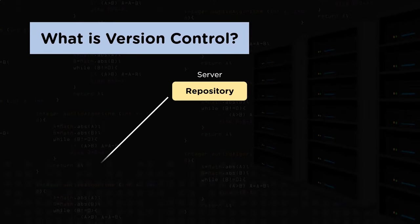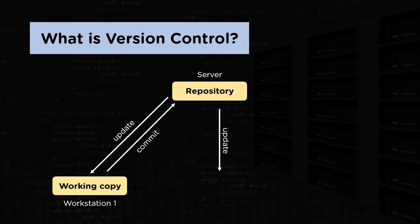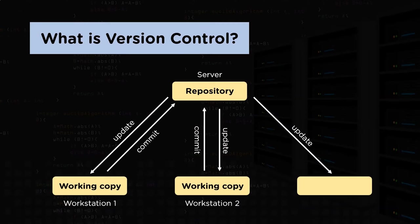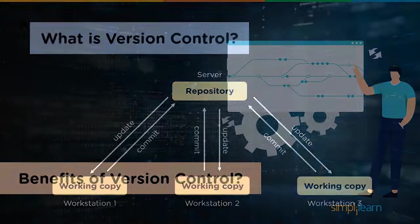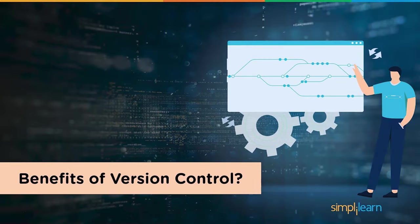Let's understand the process with the help of this picture. There are three workstations — three different developers at three different locations — and one repository acting as a server. The workstations use the repository either for committing or updating tasks. Each workstation has its own working copy and saves source code into the central server repository. This means if any particular developer's system breaks down, the work won't stop as a copy of the source code remains in the central repository.